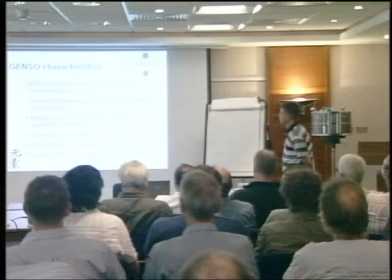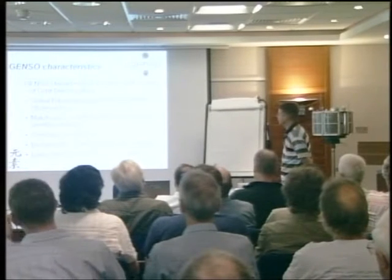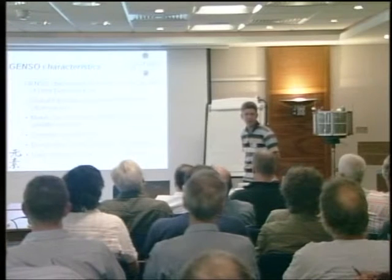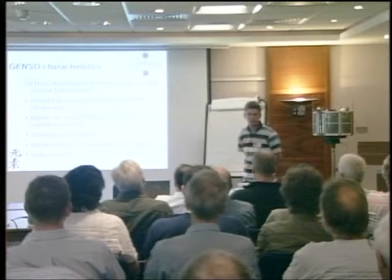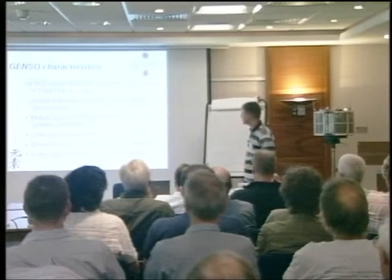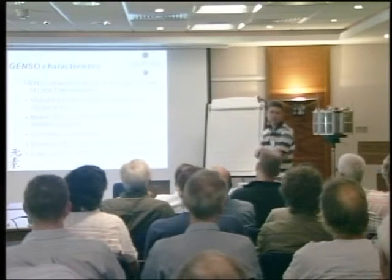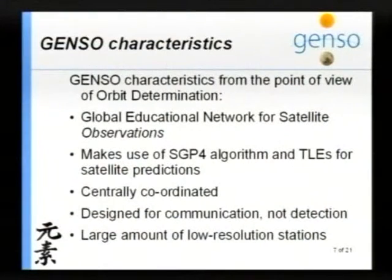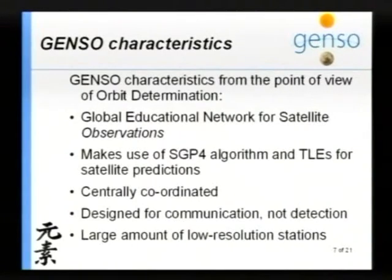From the orbit determination perspective, GENSO is a little bit different. For me it's the Global Educational Network for Satellite Observations, not operations. I only use downlink data for my project. GENSO makes use of the SGP4 algorithm for the prediction of satellites — we're happy to use Dave's conversion from C to Java. GENSO uses TLEs for satellite predictions together with SGP4. GENSO is centrally coordinated, which is nice for orbit determination. However, GENSO is designed for communication, not detection of satellites — that's an important thing for orbit determination.